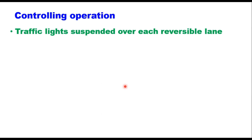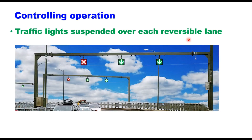Operation of reversible lanes can be controlled by three different methods. The first is traffic lights suspended over each reversible lane at the beginning and end of the section, and at intersections along the route — the most flexible means of controlling lane usage. The signal may show a normal pattern or a green arrow and a red cross. A red cross indicates the reversible lane is prohibited; a green arrow pointing downward indicates the reversible lane is permitted.